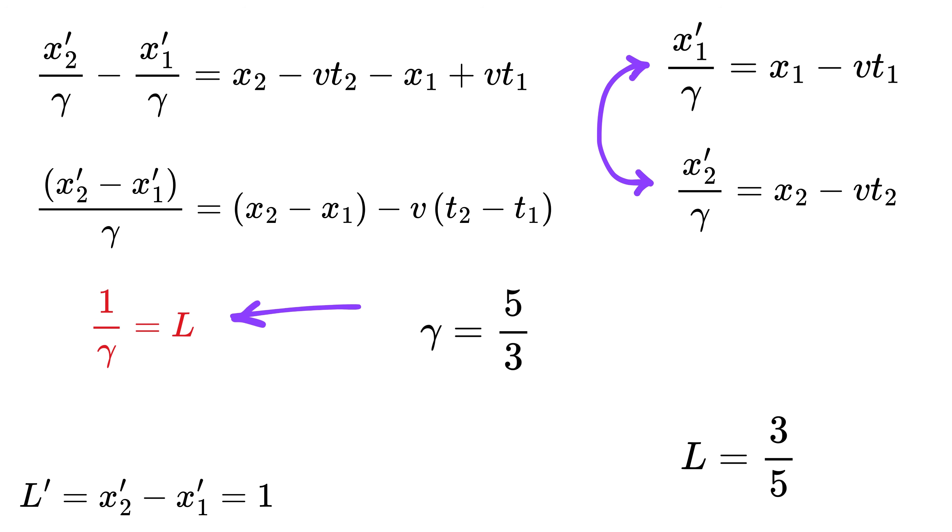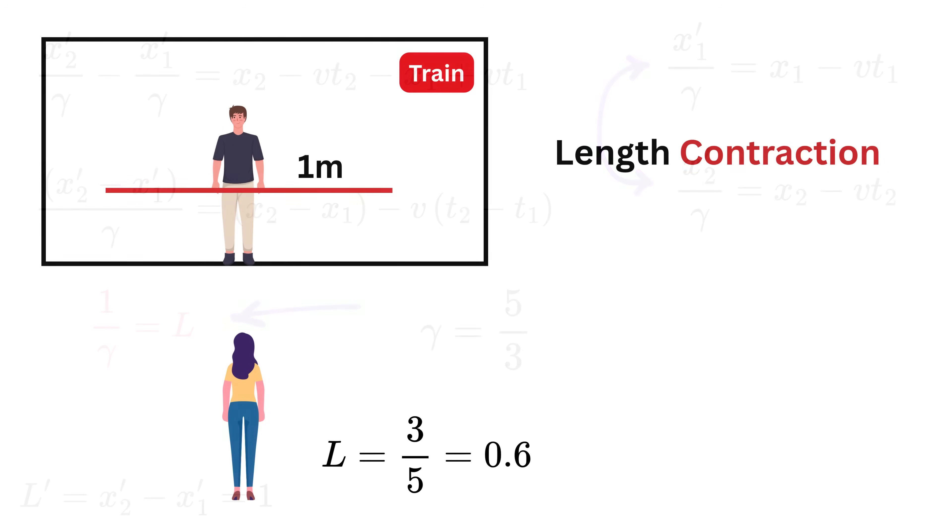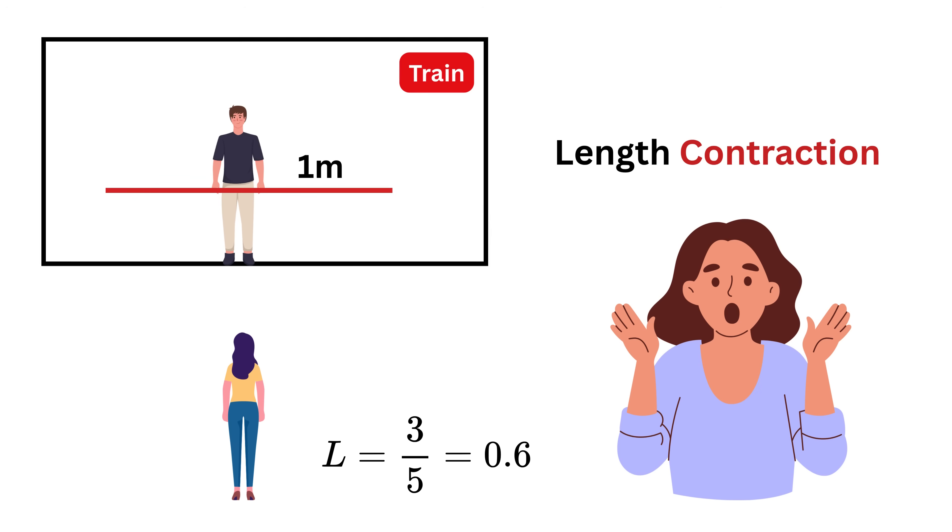This means L equals three over five or 0.6 meters. Wow. This is what is called length contraction, and it's one of the most striking effects of special relativity.